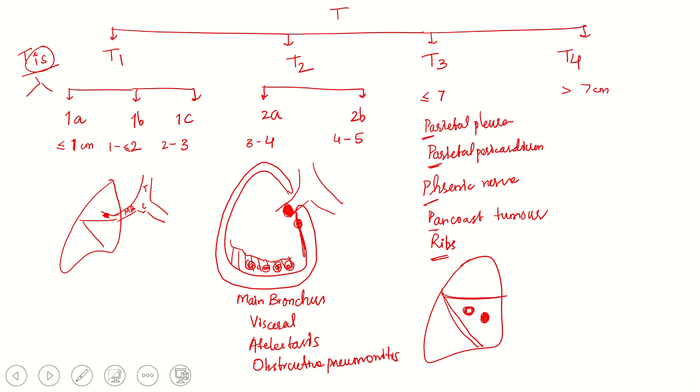Coming to T4, all other structures other than those included in T1, T2 and T3 come under T4. One important structure to remember is involvement of carina is T4. Involvement of carina and trachea. So what have we discussed? Involvement of lobar bronchus is T1, involvement of main bronchus is T2, involvement of trachea and carina is T4.